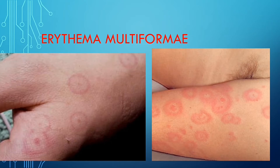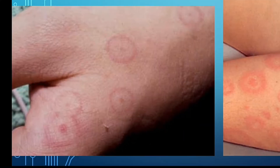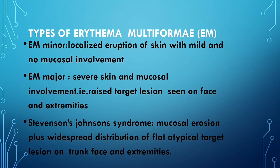It is also called bullseye lesion as it resembles a bullseye. There are three types of erythema multiforme. In erythema minor, there is only localized eruption of erythema on the skin with no mucosal involvement. In erythema major, there is severe skin and mucosal involvement — red raised target lesions seen on the face and extremities.